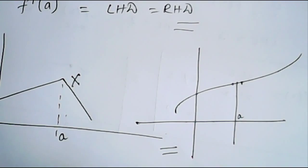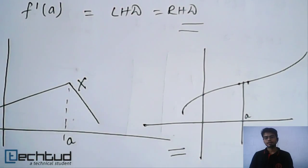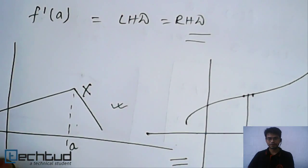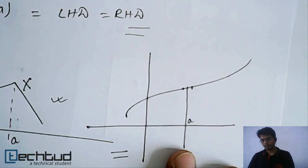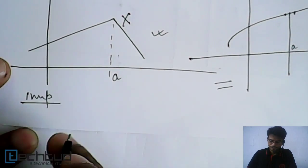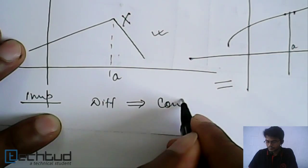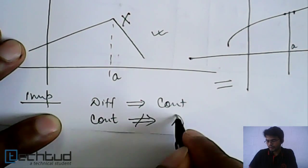Now we have an important relation here. If a function is differentiable at a point x equal to a, it means that the function will be continuous. But if it is continuous, it is not necessary that it will be differentiable — for example, here the function is continuous but it is not differentiable at x equal to a. So: if function is differentiable, it implies that it is continuous. But if function is continuous, it doesn't imply that it will be differentiable.